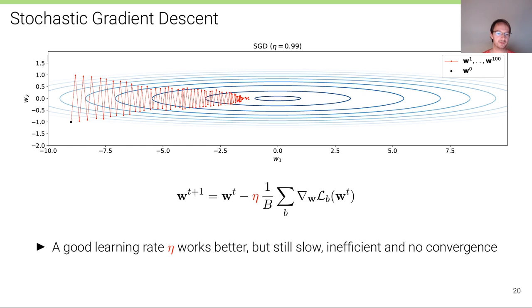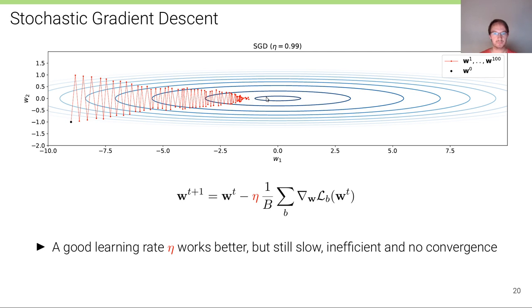With η=0.99, we oscillate towards the minimum, with step sizes becoming smaller and smaller. But with a fixed learning rate we can never truly converge, because even starting at the optimal solution we would still oscillate due to noise in the mini-batch gradients.